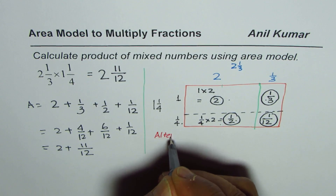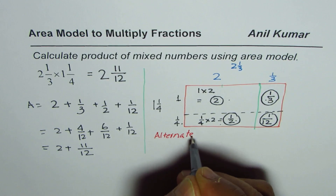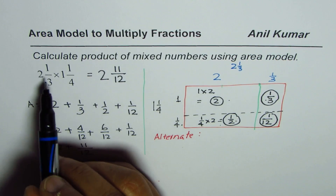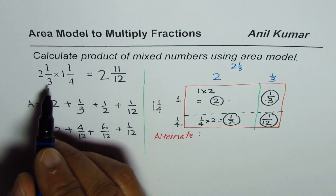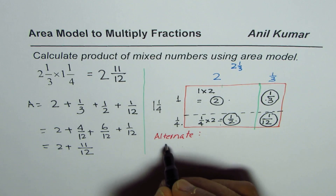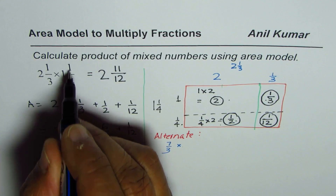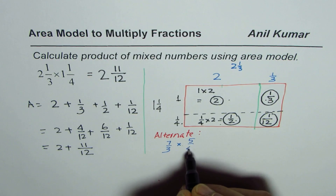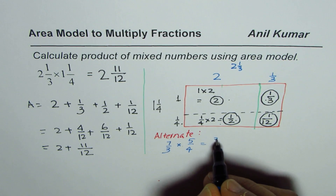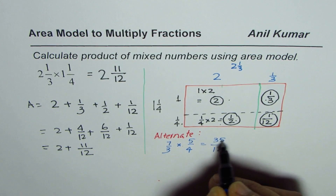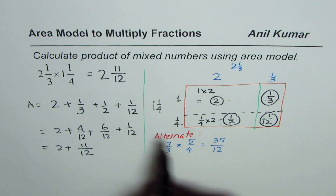Now let us check using the alternate method, which is to write the mixed numbers as improper fractions and multiply. 2 1/3 becomes 7/3, and 1 1/4 becomes 5/4. Multiplying the numerators gives 35, and the denominators give 12, so we get 35/12.